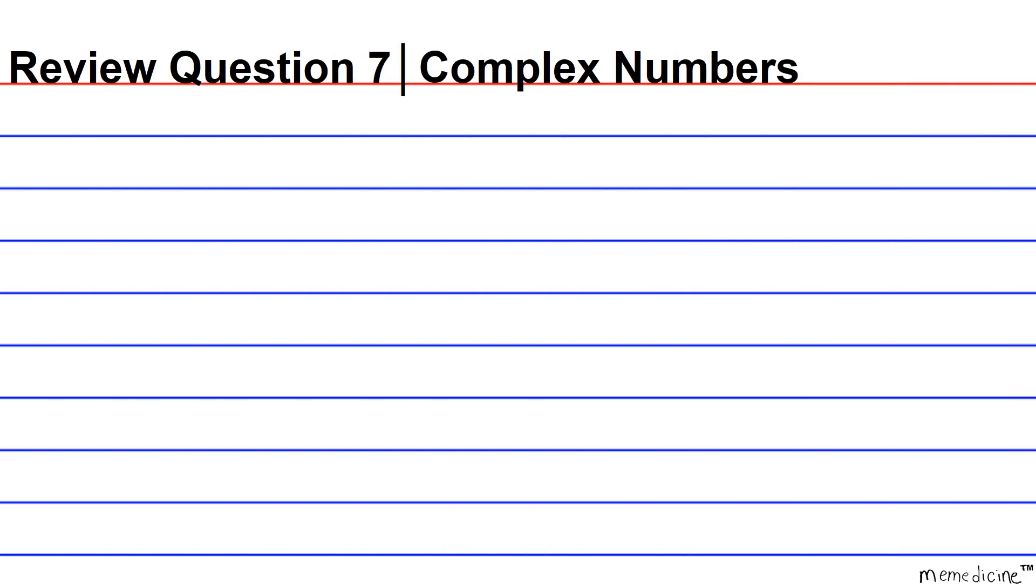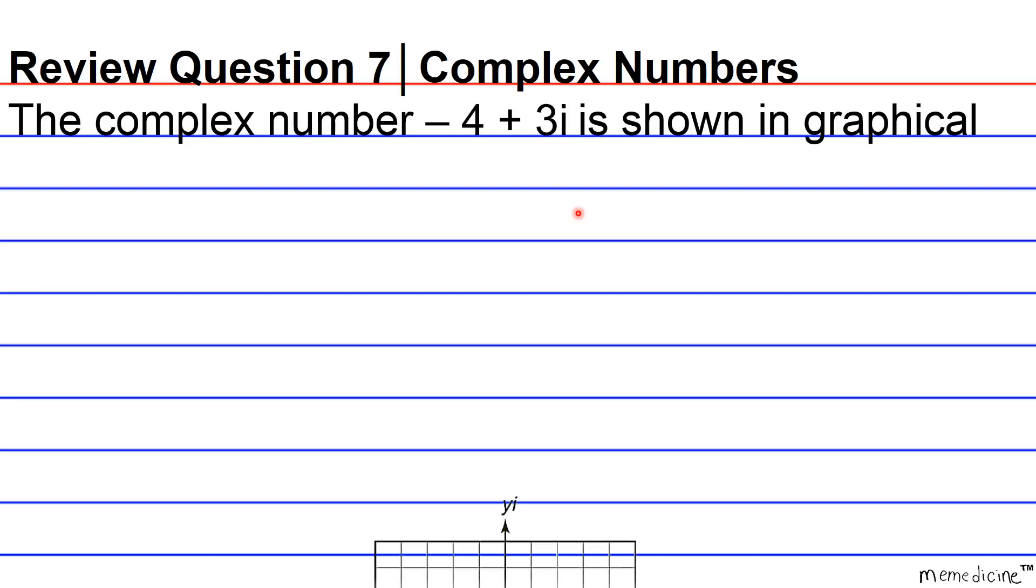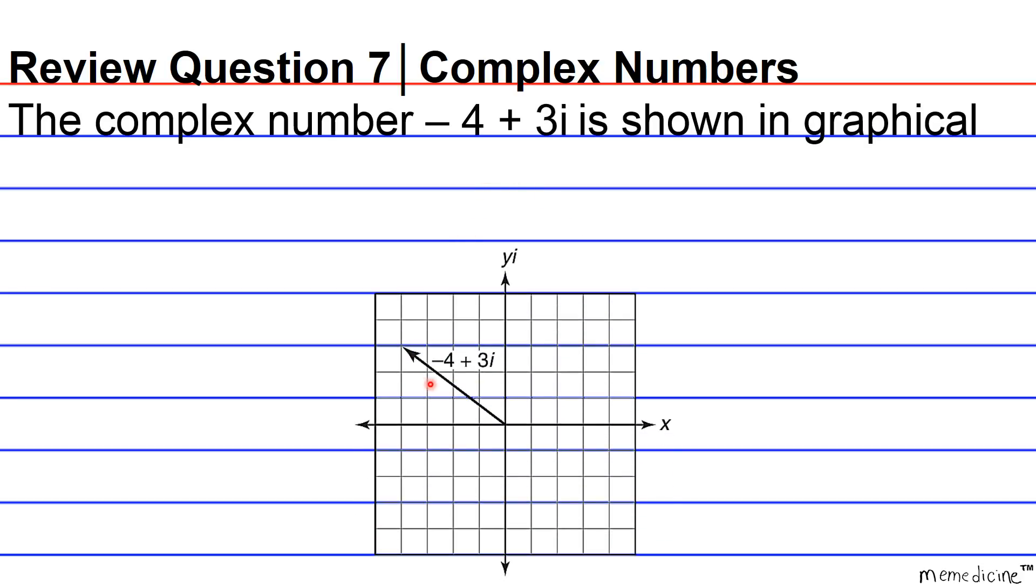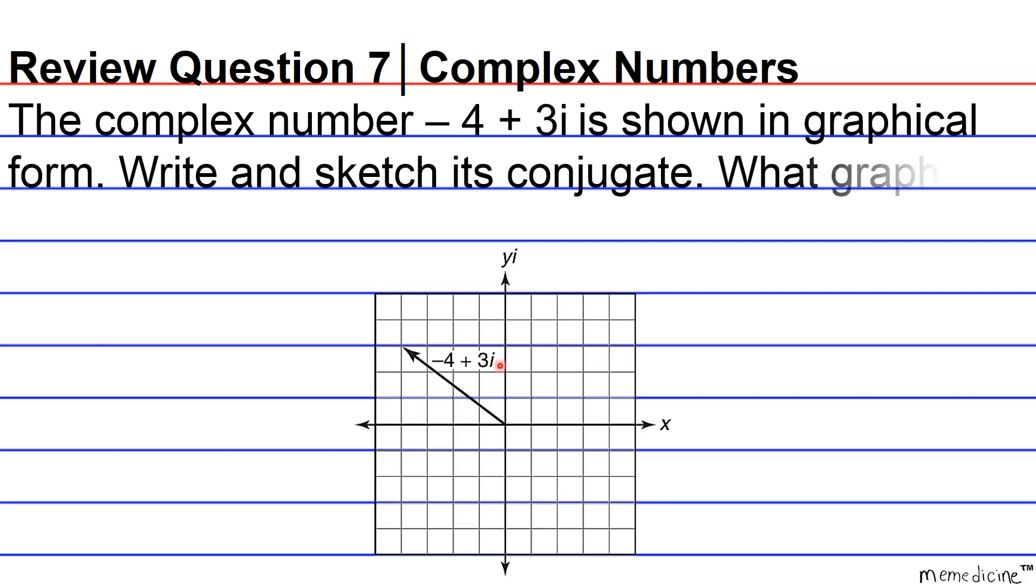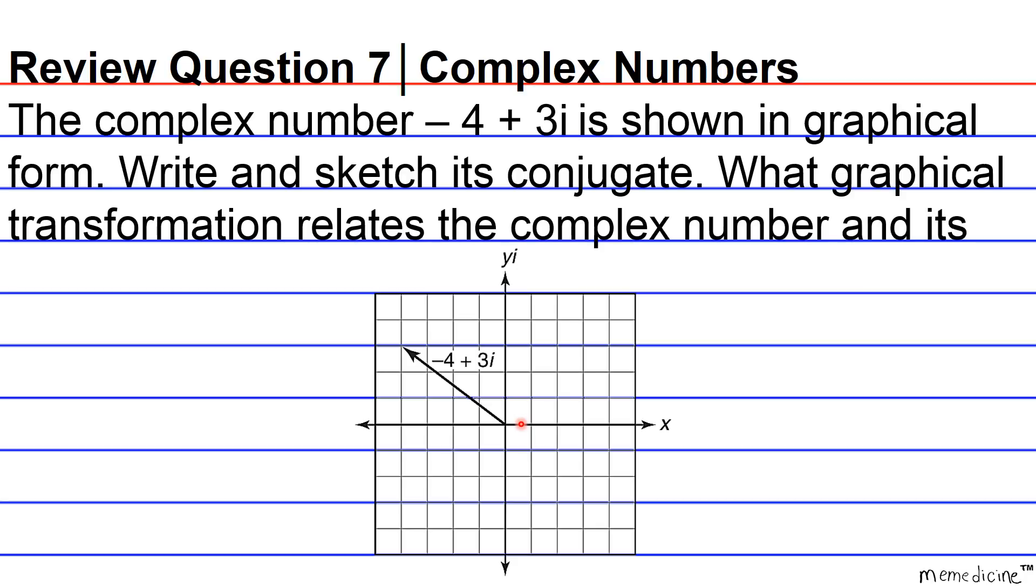Review Question 7, Complex Numbers. The complex number negative 4 plus 3i is shown in graphical form. Write and sketch its conjugate. What graphical transformation relates the complex number and its conjugate?